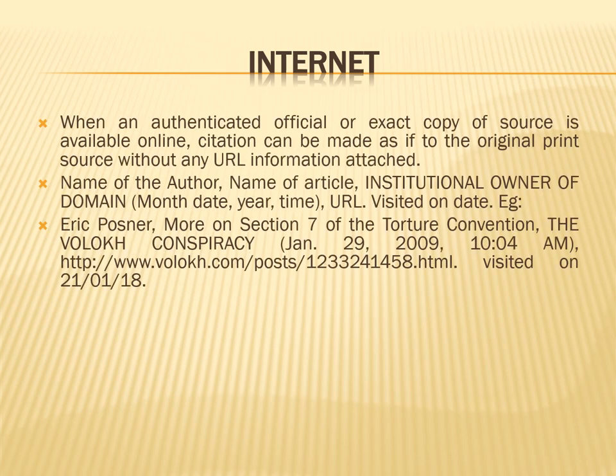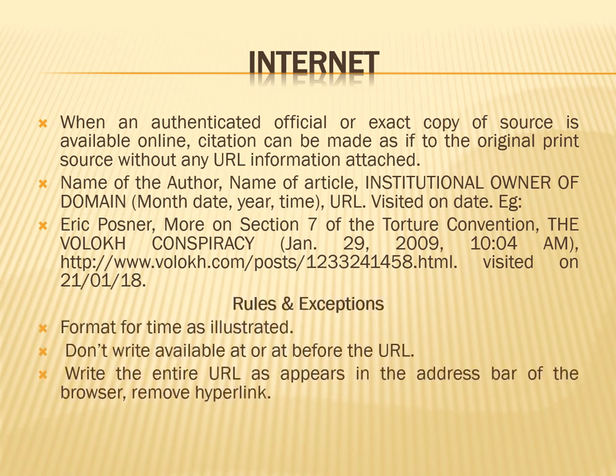The next source, very popular amongst the youth, is the internet. When an authentic official or exact copy of a source is available online, citation can be made as if to the original print source without any URL information attached. If you are citing an article from an online journal or e-newspaper, write first the name of the author, then the name of the article, then the institutional owner of the domain, then month, date, year, time, and the URL. Always mention 'visited on' a particular date. Write the entire URL as it appears in the address bar of the browser and remove the hyperlink.